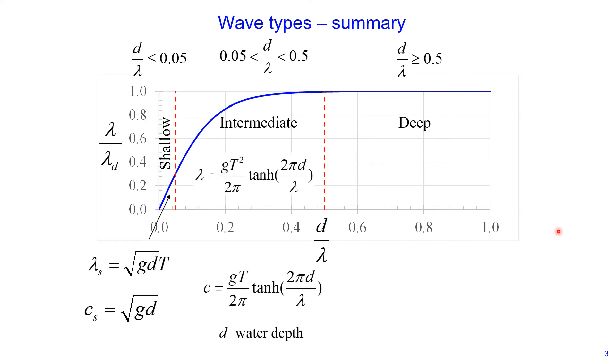And now for each of these regions, I show a summary, which is equations for wave speed and wavelength. You can see that it's only for intermediate waves when you use the full equation, and you have to solve the wavelength equation using iteration method because you have lambda on both sides of this equation.